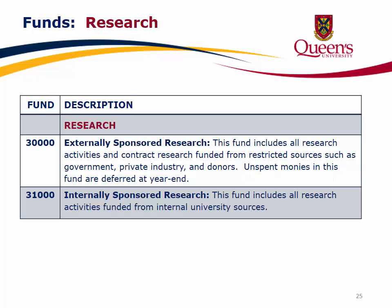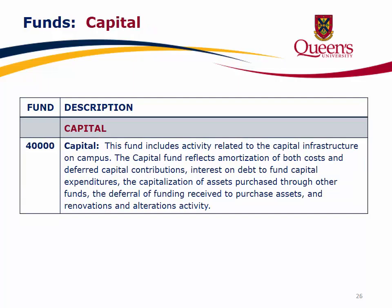Fund 30,000 represents externally sponsored research, including all research activities funded from restricted sources such as government, private industry, and donors. Unspent monies in this fund are deferred at year-end. Fund 31,000 represents internally sponsored research, including all research activities funded from internal university sources. Fund 40,000, the capital fund, includes activity related to capital infrastructure on campus, reflecting amortization of costs and deferred capital contributions, interest on debt, capitalization of assets, deferral of funding, and renovations and alterations activity.